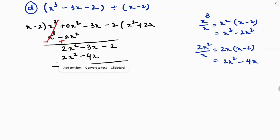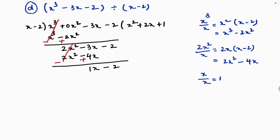Subtracting, this minus becomes plus. So 2x square minus 2x square cancels, and minus 3x plus 4x is 1x, bringing down minus 2. Now the first term is x and we divide by x, giving 1 in the quotient. Write plus 1, and multiply with the divisor x minus 2: 1 into x minus 2 is x minus 2.